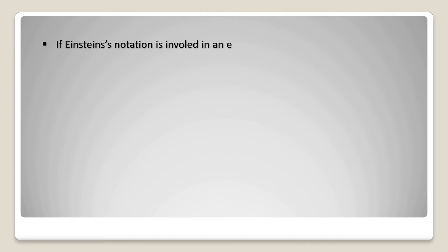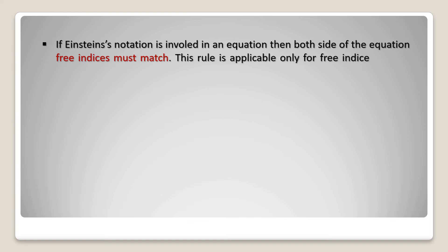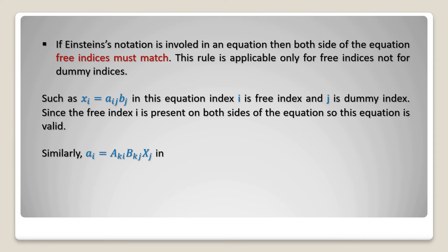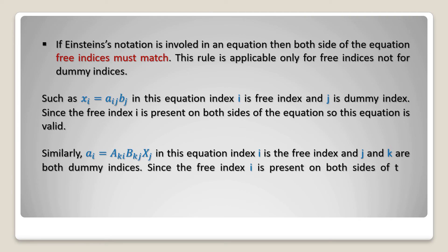If Einstein's notation is involved in an equation, then the free indices must match on both sides of the equation. This rule is applicable only for free indices, not for dummy indices. For example, xi equals aij bj, where index i is the free index and j is the dummy index. Since the free index i is present on both sides of the equation, this equation is valid. Similarly, ai equals aki bkj xj, where index i is the free index and j and k are both dummy indices. Since the free index i is present on both sides, this equation is valid.